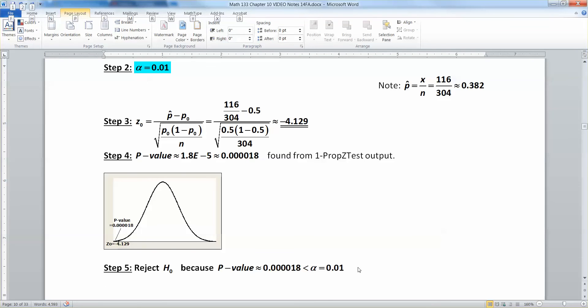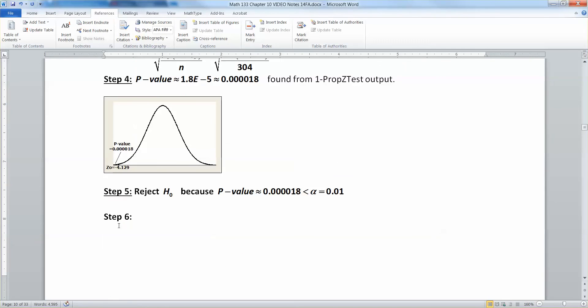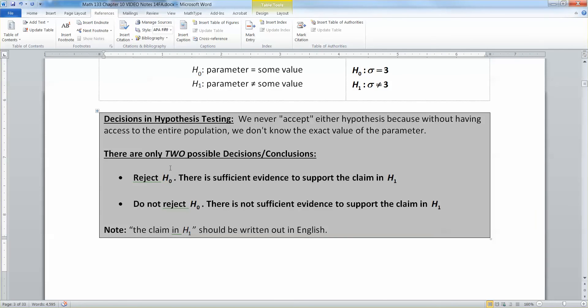Then, for step six, you have to write out your conclusion that we learned about way back in 10.1. Let me go grab the page. Right here in 10.1 we said if you reject H naught then you write there is sufficient evidence to support the claim in H1 and you write out that claim in H1 in English.